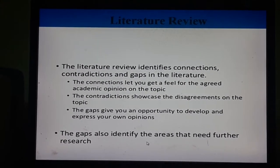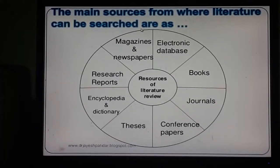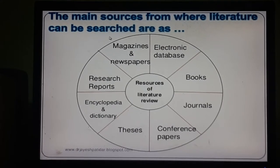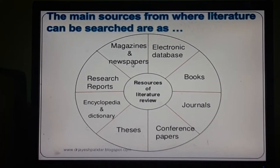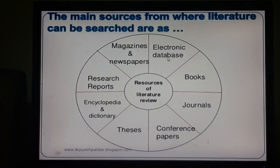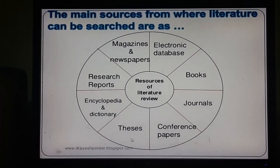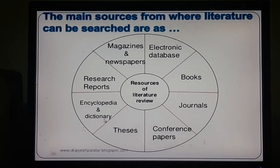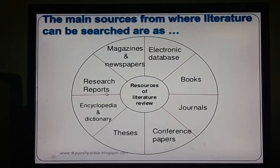The gaps also identify the areas that need further research. The main sources from where literature can be searched are magazines and newspapers, electronic database, books, journals, conference papers, theses, encyclopedia and dictionary, and research and other reports.